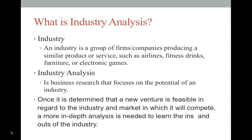Today we'll draw examples from multiple different industries — old traditional industries and new technological ones. An industry is a group of firms or companies that produce a similar product or service, such as airlines, fitness drinks, furniture, electronic games, and cars. Basically, we can classify an industry as a group of companies producing a similar product or service.